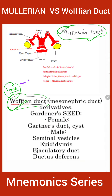So how to remember the Mullerian duct? Basically, everything you see in red is Mullerian — M. So in the M-shape, whatever you see in red color, this is the Mullerian duct.